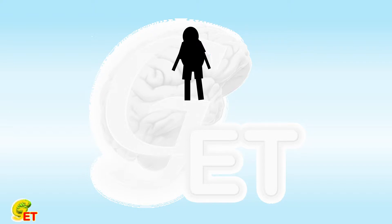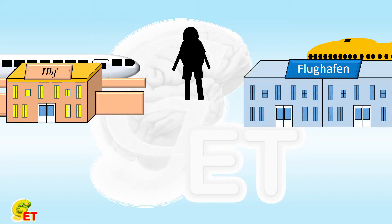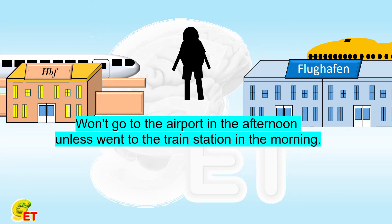The target must go to the train station or the airport once, every morning and every afternoon. You ask: is there a rule? The assistant replied: he won't go to the airport in the afternoon unless he went to the train station in the morning.